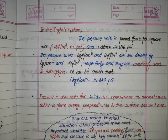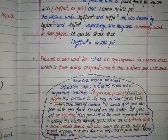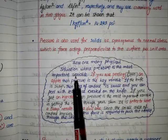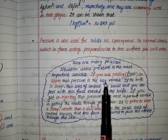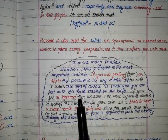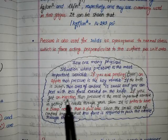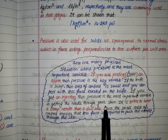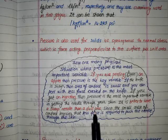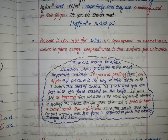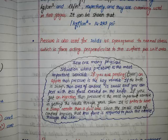It can be shown that 1 kgf per centimeter square equals 14.223 psi. Pressure is also for solids synonymous to normal stress, which is force acting perpendicular to the surface per unit area. There are many physical situations where pressure is the most important variable. If you are peeling an apple, a sharp knife has a small area of contact so you can peel with less force. Similarly, a sharp needle requires less force to push through skin than a dull one.